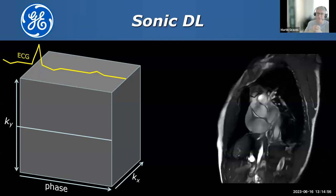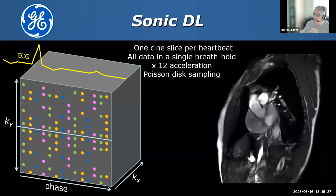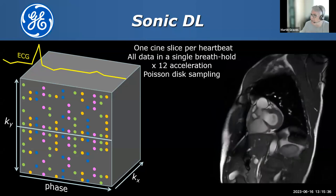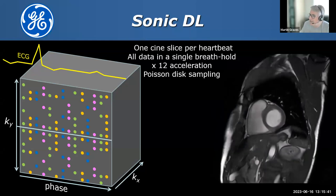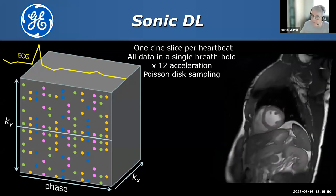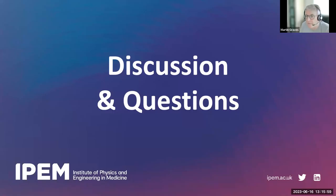GE released Sonic DL at this year's ISMRM. This is a multi-phase acquisition using sub-sampling — in the same way as compressed sensing — but then put through a modification of the Air Recon DL algorithm called Sonic DL. Each CINE slice is acquired in a single heartbeat, and the entire stack of slices is obtained in a single breath-hold, using 12-fold acceleration with Poisson disk sampling.